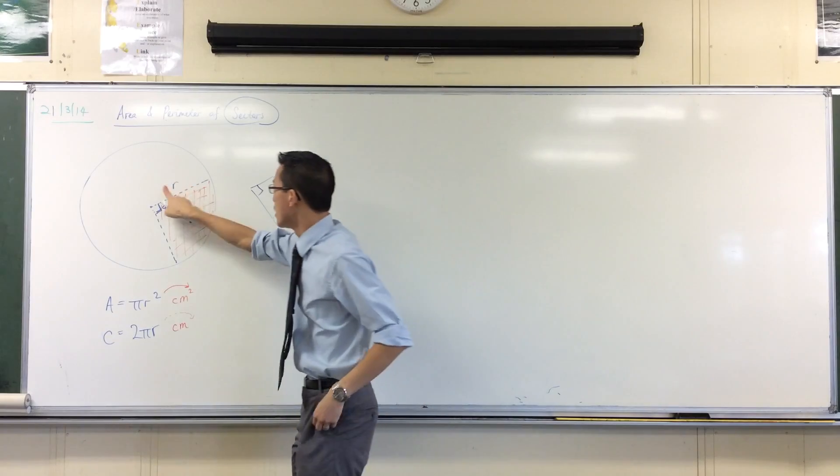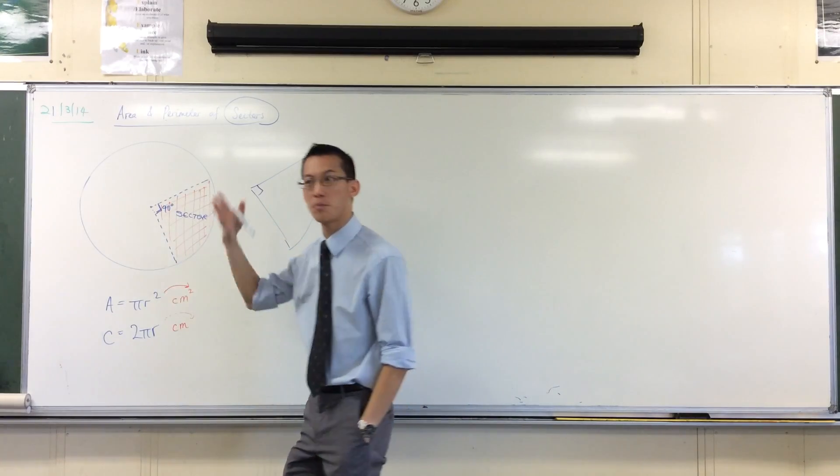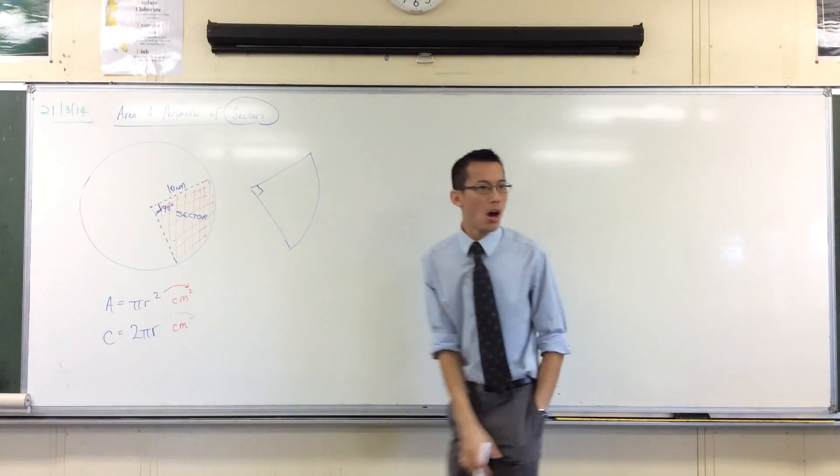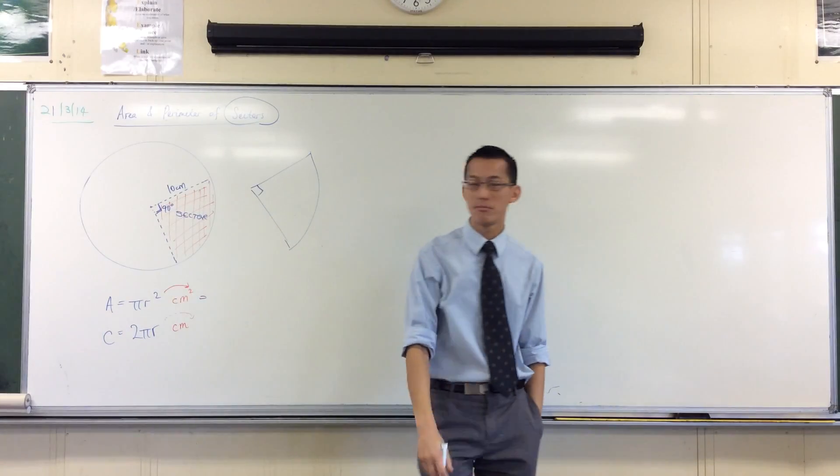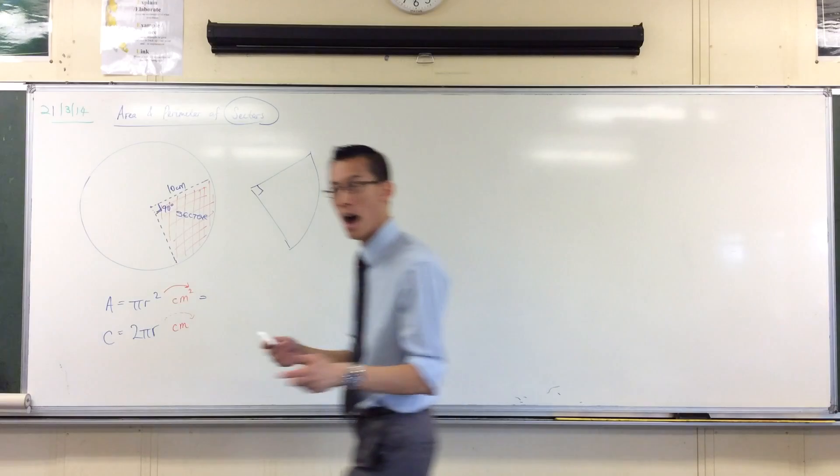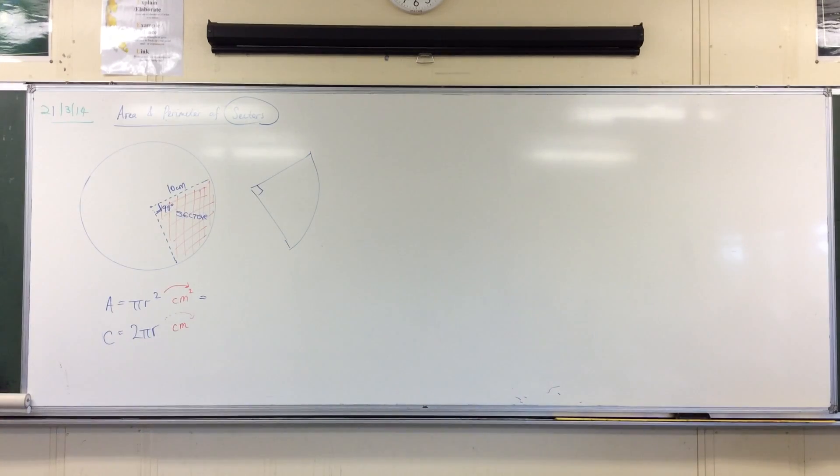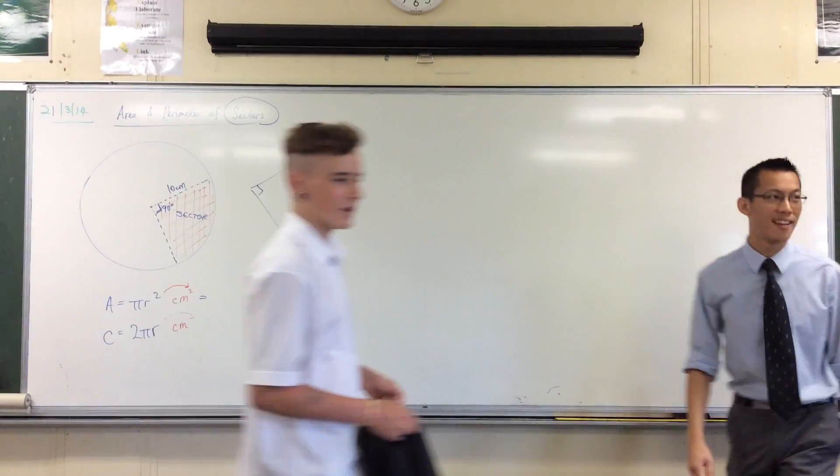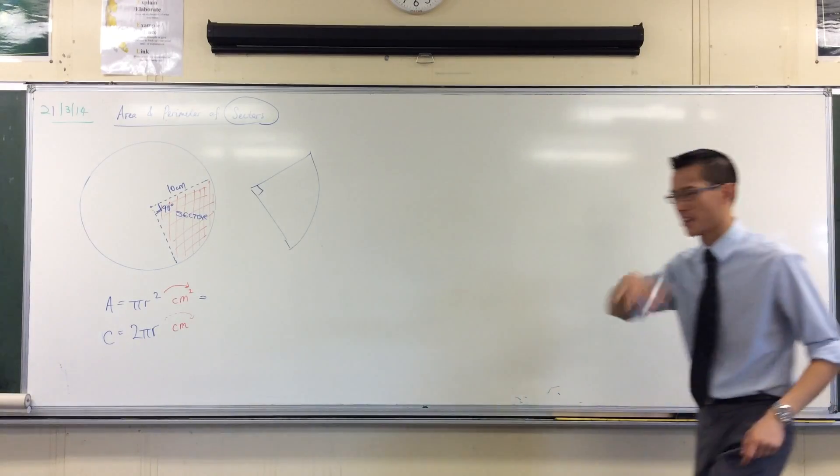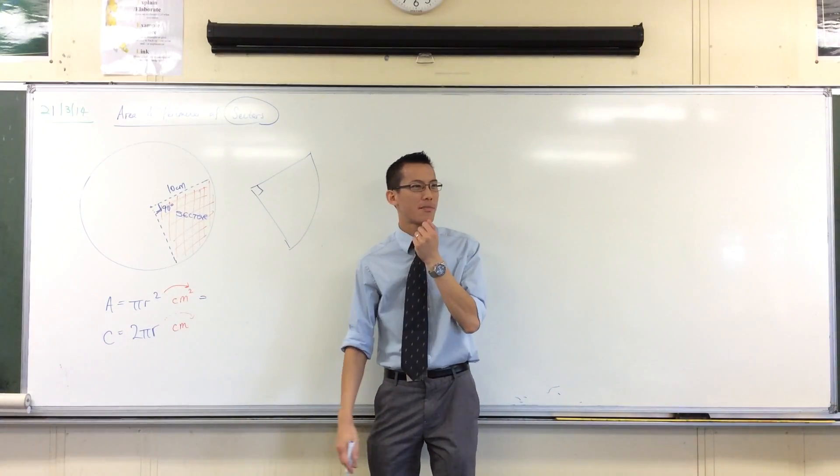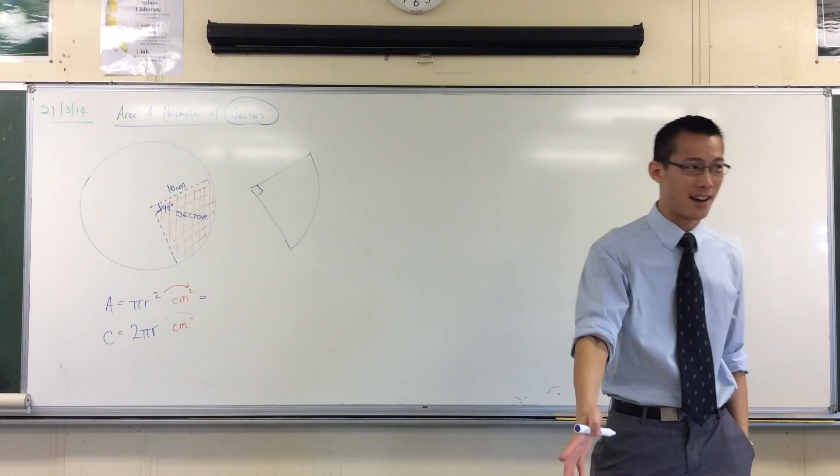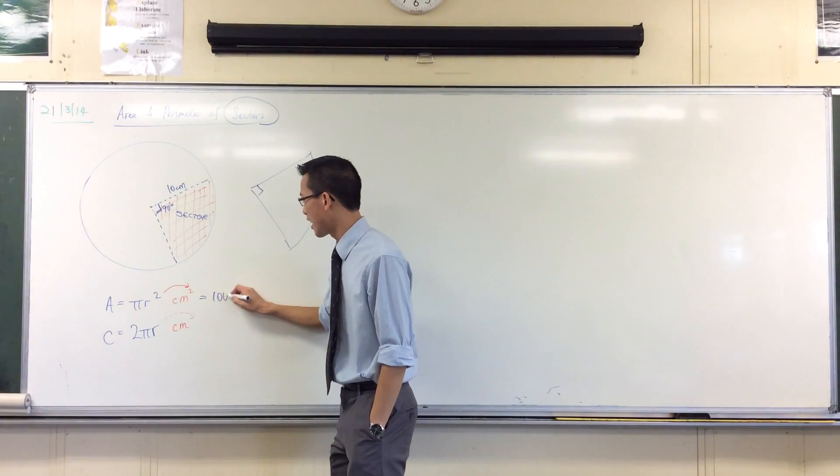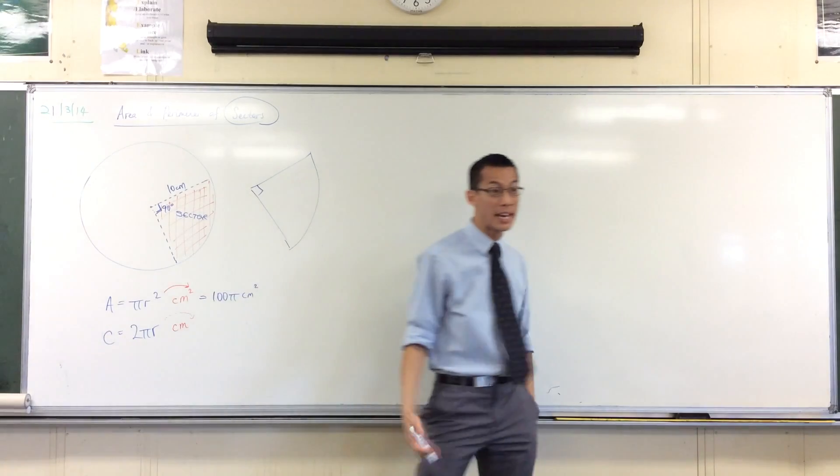So if I want to work out this area, let's actually put some numbers on it, shall we? Suppose your circle had a radius of 10 centimeters. What would be the whole area? The whole area would be π r squared. R is 10, so r squared is 100, right? So you're going to get 100π centimeters squared.